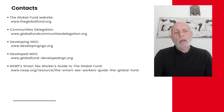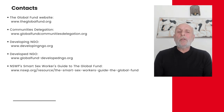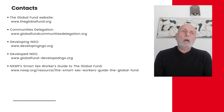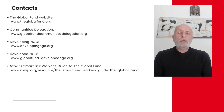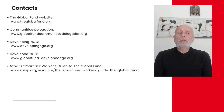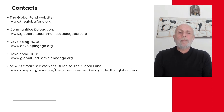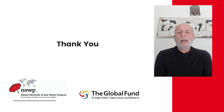The final slide includes some contacts. There's the Global Fund website, which is really worth spending time navigating — there is a lot of information there, though not all of it is translated into other languages. The Communities Delegation, the Developing Country NGO Delegation, and the Developed Country NGO Delegation all have their own websites. And the final link is for the NSWP Smart Guide to the Global Fund, which can be found on the NSWP website. That brings us to the end of this video — I hope it was helpful and interesting, and I'll see you in the next video.